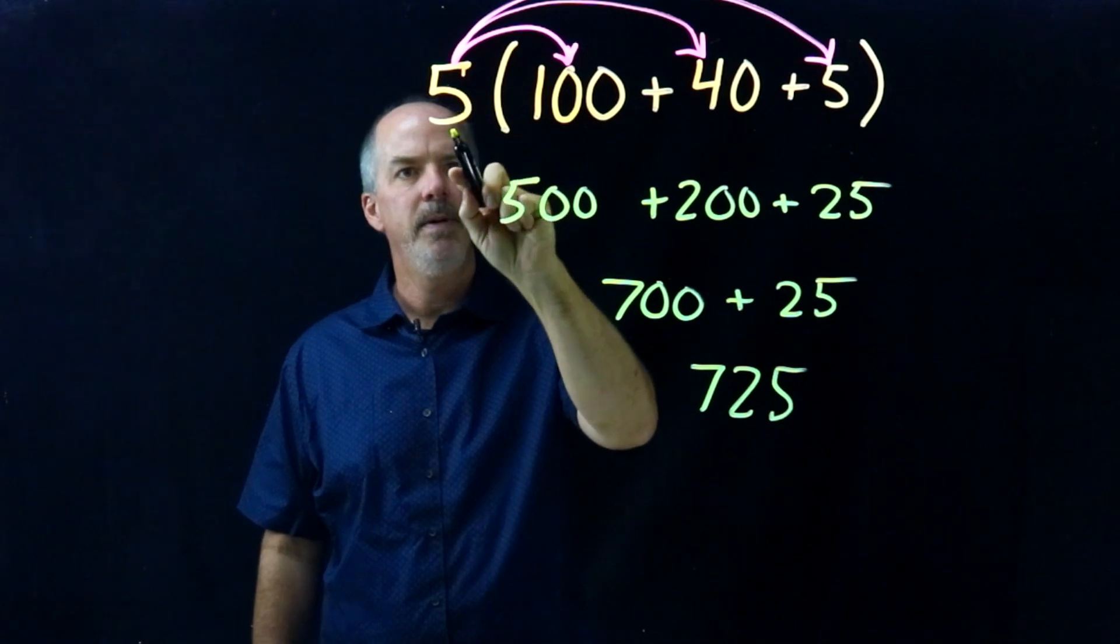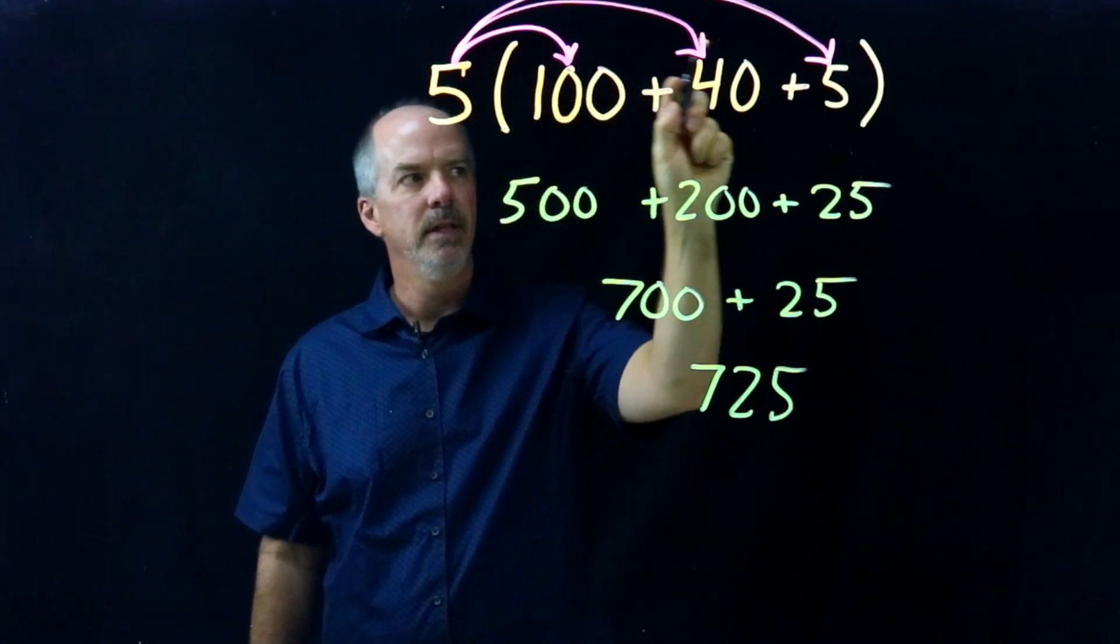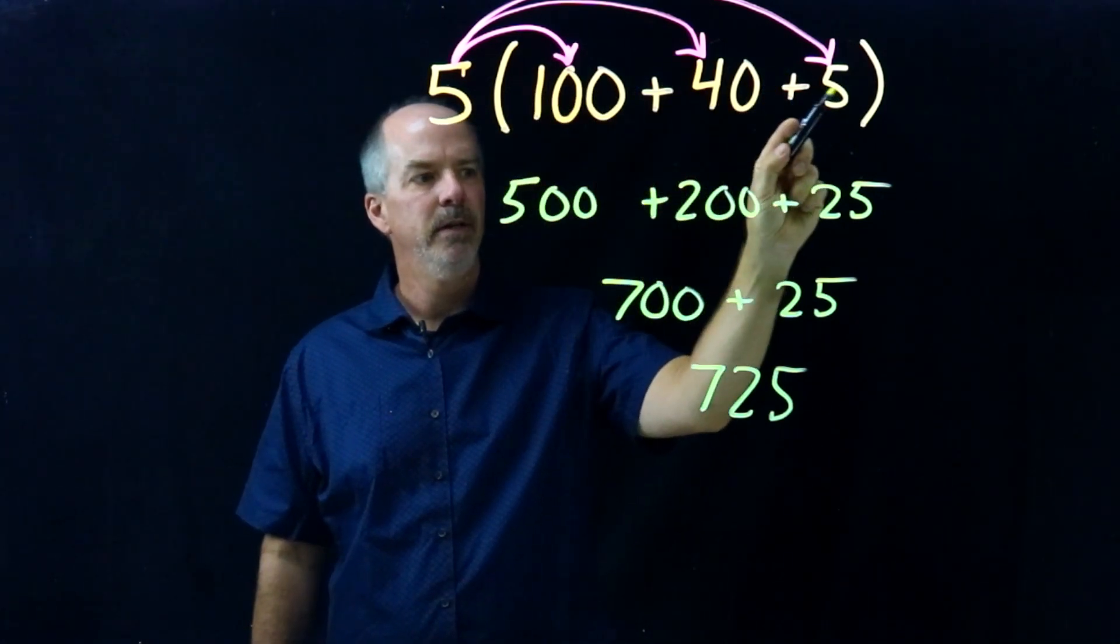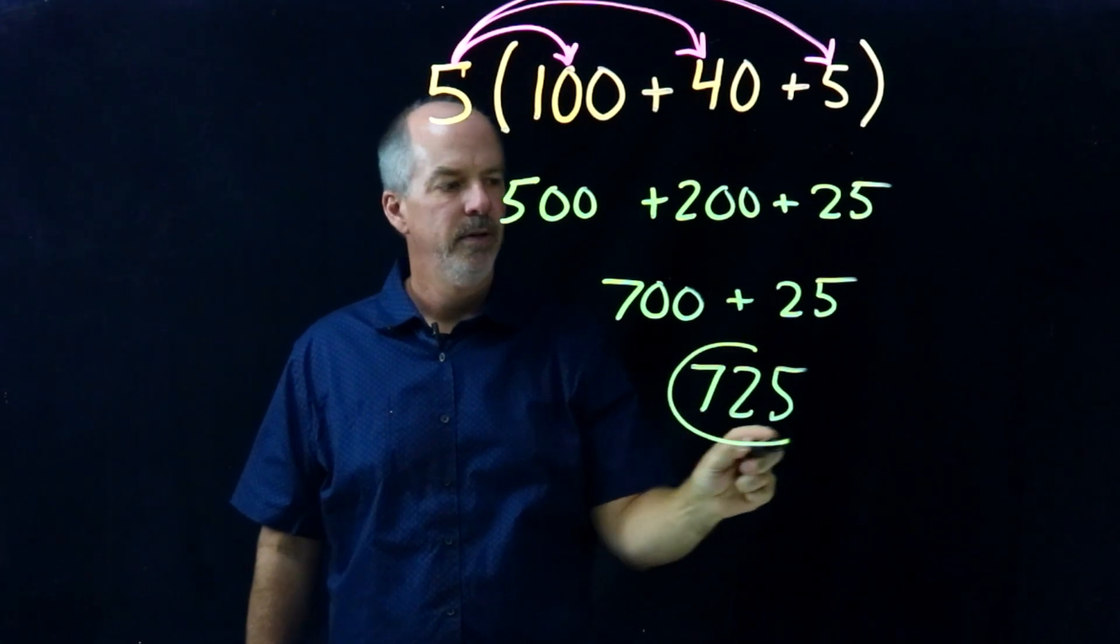So we use the Distributive Property to distribute the five into the parentheses. We multiply it by all three terms and we came up with seven hundred and twenty-five as our answer.